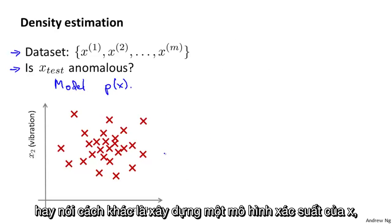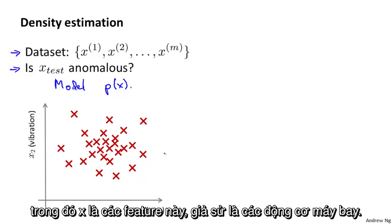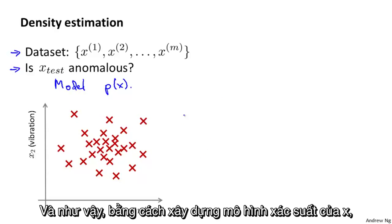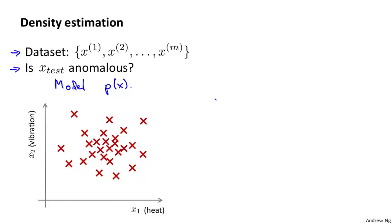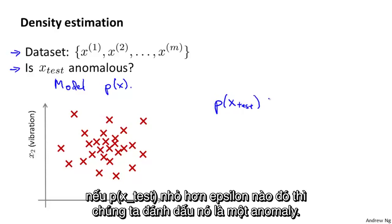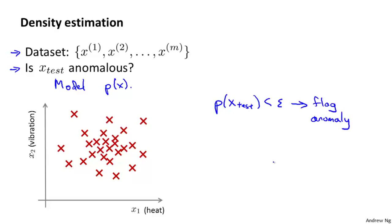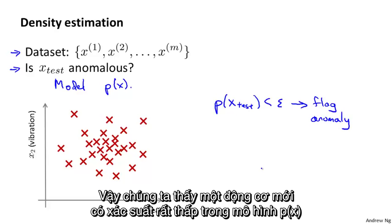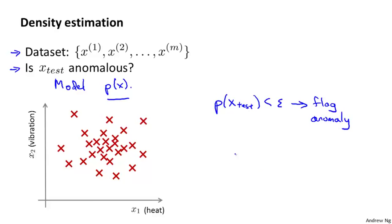In other words, we're going to build a model for the probability of X, where X are these features of, say, aircraft engines. And so having built a model of the probability of X, we're then going to say that if for the new aircraft engine, if P of X test is less than some epsilon, then we flag this as an anomaly.